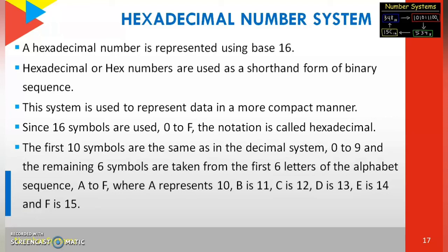How do we represent the hexadecimal number system? The numbers from 0 to 9 are represented as-is. After 9, we represent each number using alphabetical letters: instead of 10 we write A, 11 is B, 12 is C, 13 is D, 14 is E, and 15 is F. Hexadecimal is also called hex. Hex numbers are used as a shortened form of binary sequences and are used to represent data in a more compact manner.